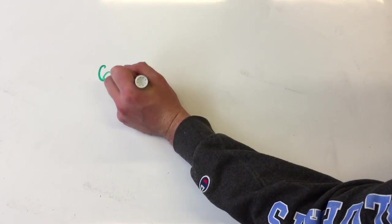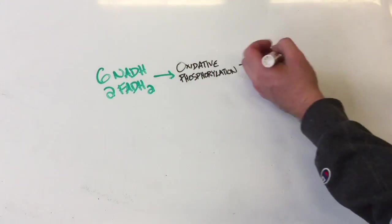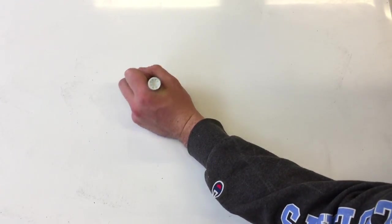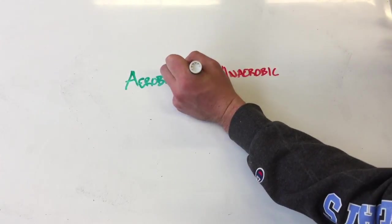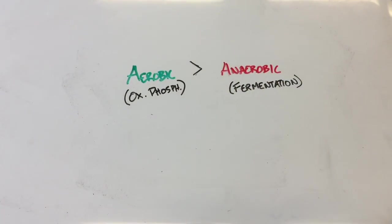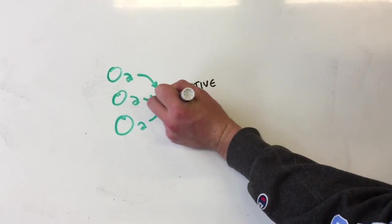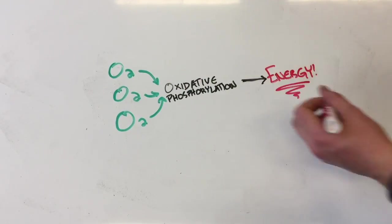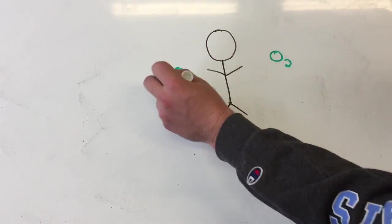In total, 6 NADH and 2 FADH2 molecules are consumed by oxidative phosphorylation to produce 30–34 ATP molecules. Oxidative phosphorylation is an aerobic process, meaning it requires oxygen, and it is much more efficient at synthesizing ATP than its anaerobic counterparts, such as fermentation. So oxygen is needed to carry out oxidative phosphorylation, and oxidative phosphorylation is needed to synthesize energy most efficiently in a cell. This explains why oxygen is so important to us and many other organisms — and that's why we breathe oxygen to survive.